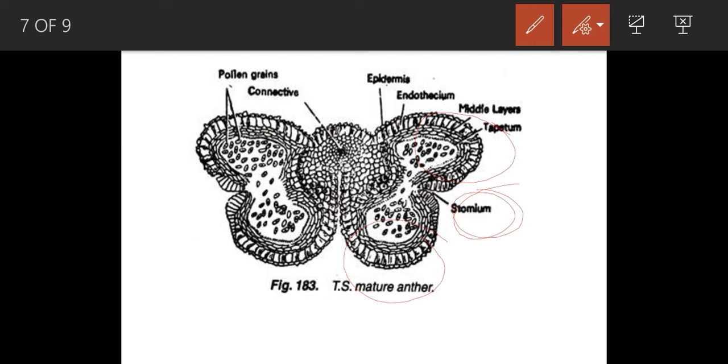The outer layer epidermis is protective in function. Inner to the epidermis is the endothecium, which has callous thickening present. It will lose water and will contract. It will break the connection with the outer layers.